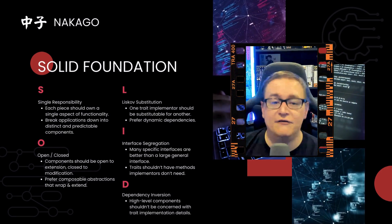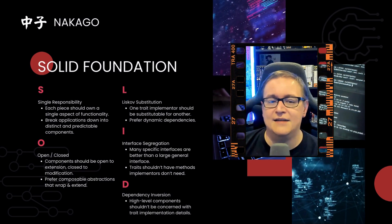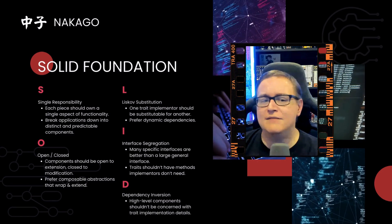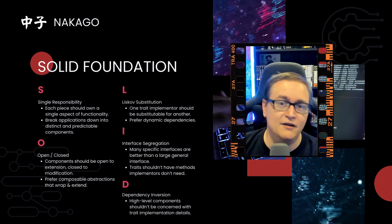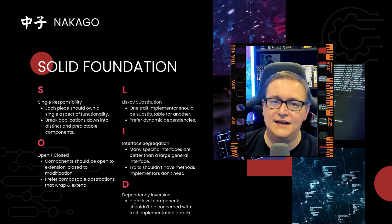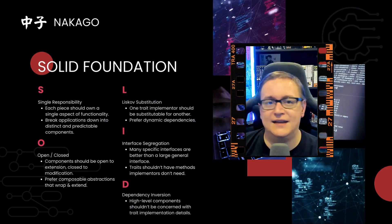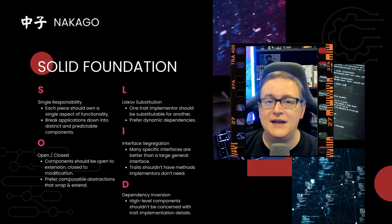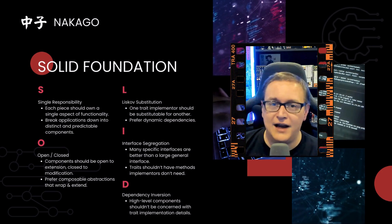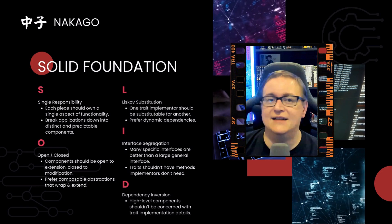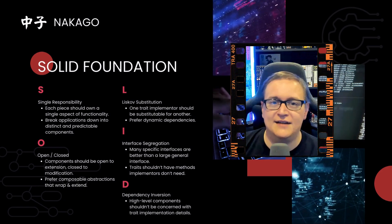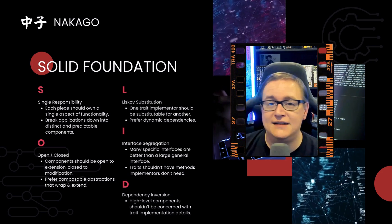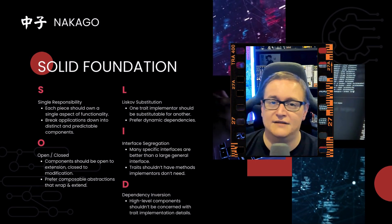Interface Segregation is really important too — that's the idea that many specific interfaces are better than one large general interface. Traits shouldn't have methods that implementers don't need, so divide things up into logical groupings and only give implementers the methods they really need to implement. Dependency Inversion really ties into the dependency injection system: high-level components shouldn't be concerned with trait implementation details or which implementer is being used. They should just accept the dependencies and work with them, and Nakago's dependency injection container provides strong tools to make that a reality.